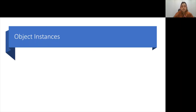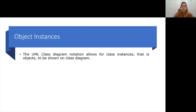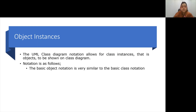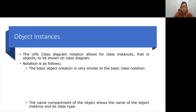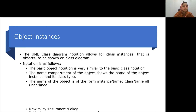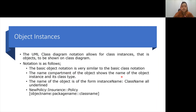Class diagrams also provide notations to show objects or instances of a class. Normally, objects or instances are used to illustrate an object diagram for a particular scenario; however, if necessary, objects can appear in the class diagram as well, though it is not recommended. The basic object notation is very similar to class notation. The name compartment shows the name of the object instance and its class type, written as instanceName:ClassName and underlined.